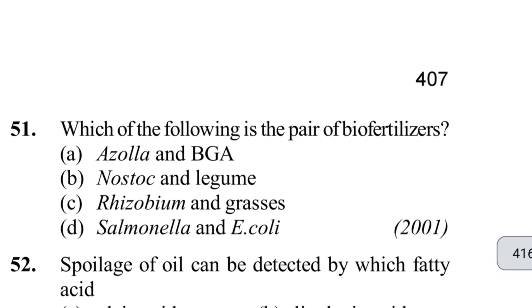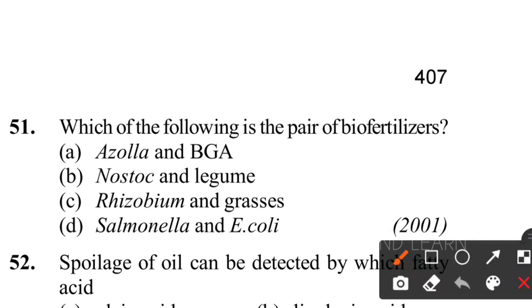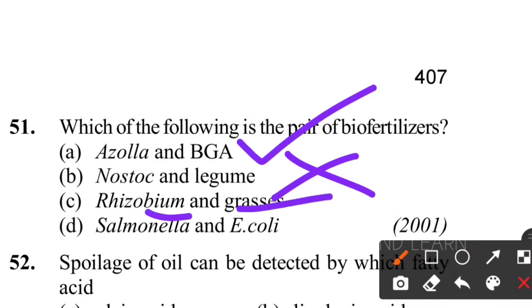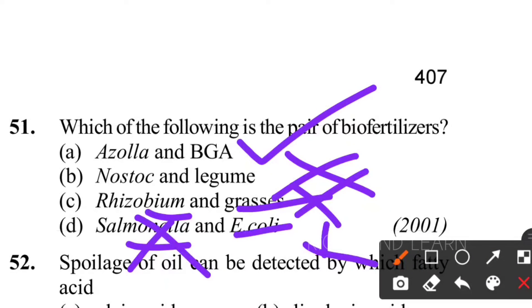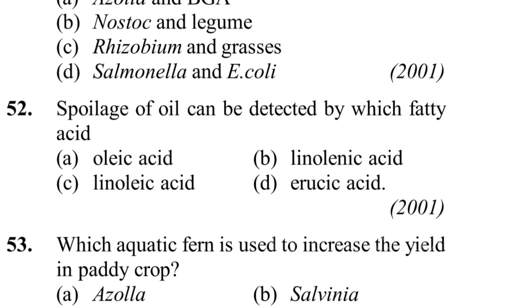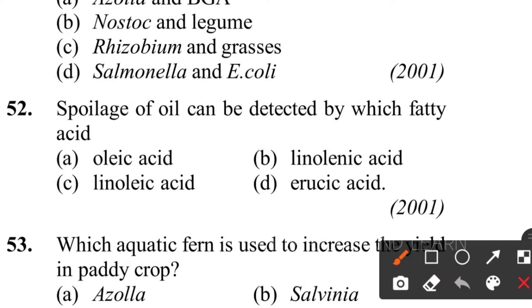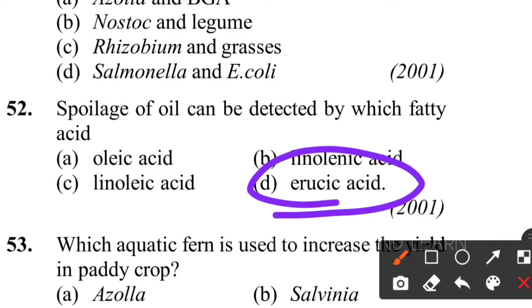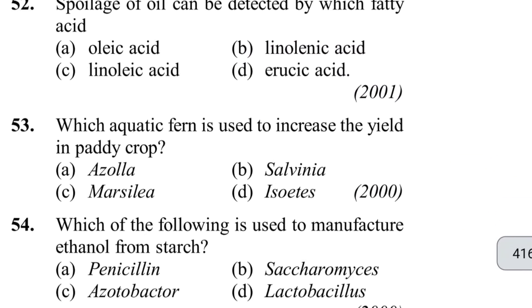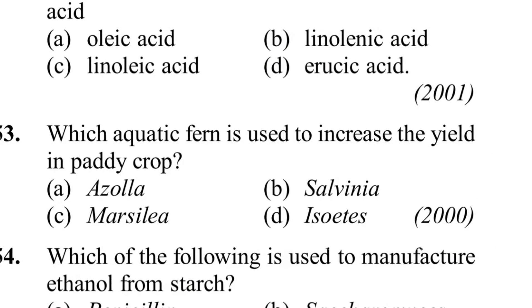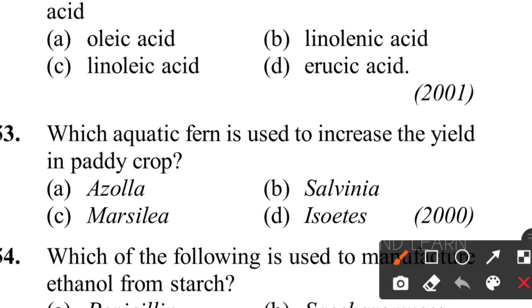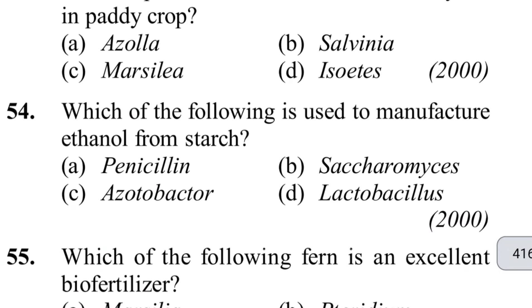Fifty-first question: a pair of bio-fertilizers - Azolla and BGA (Blue-Green Algae) - yes, both are bio-fertilizers. Nostoc and legume - Rhizobium yes but grass is not; Salmonella and E. coli are not bio-fertilizers. Option A is the correct answer. Fifty-second question: spoilage of oil can be detected by which fatty acid? Option D - erucic acid - an unsaturated fatty acid used as a binder for oil paint and for checking spoilage of oil. Fifty-third question: which aquatic fern increases yield in paddy crops? Option A - Azolla.